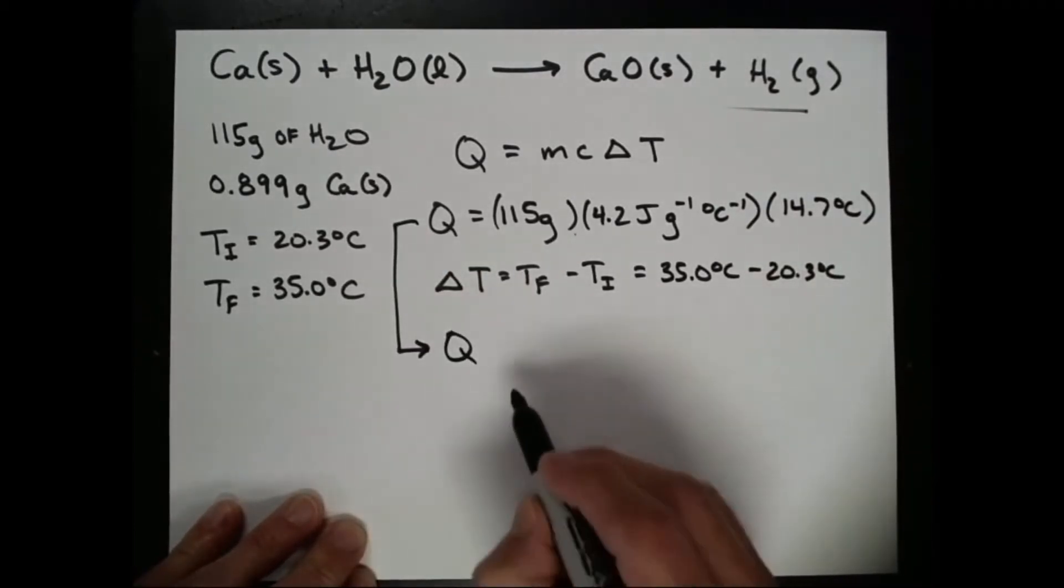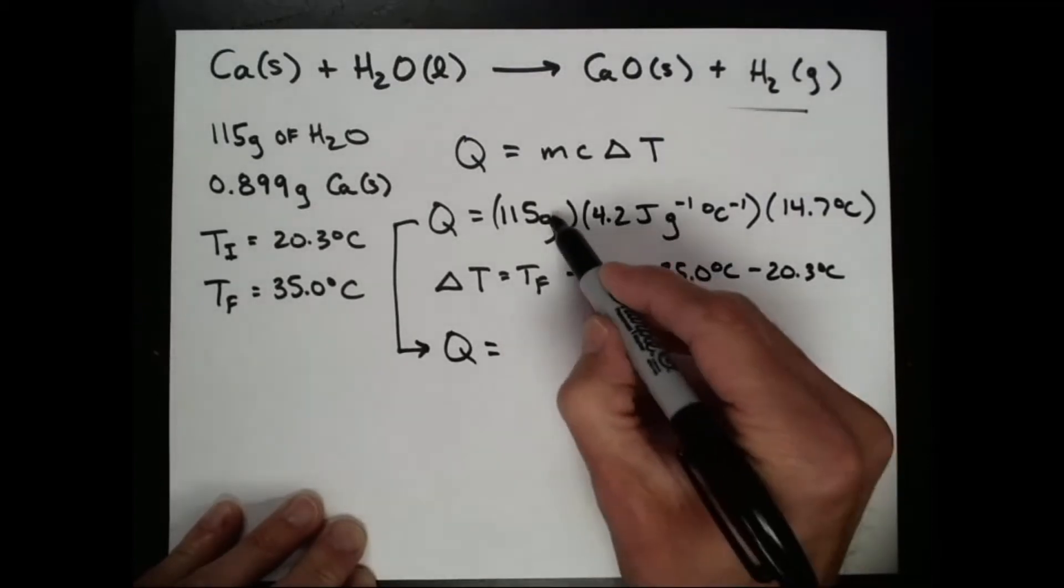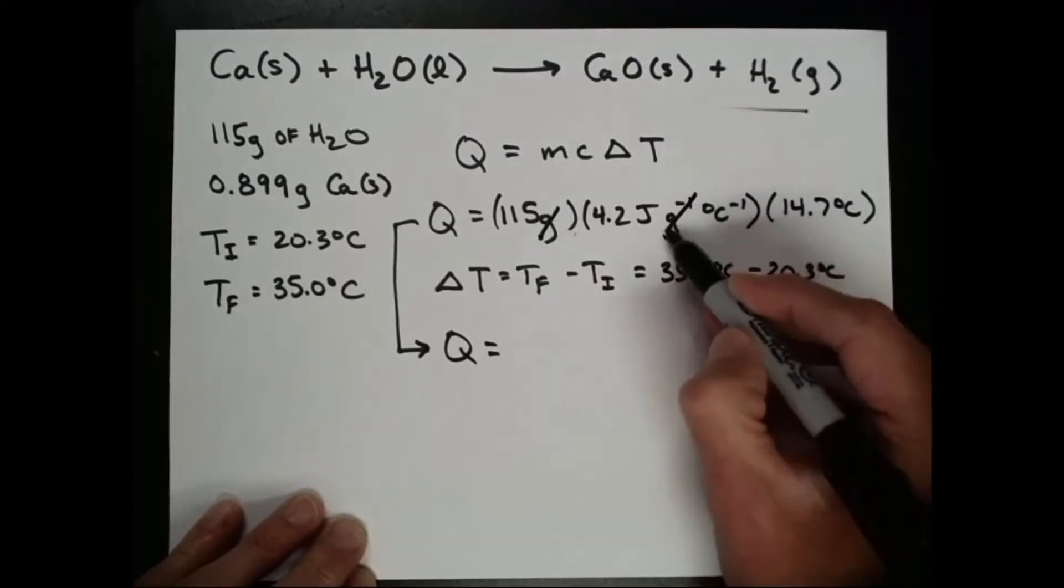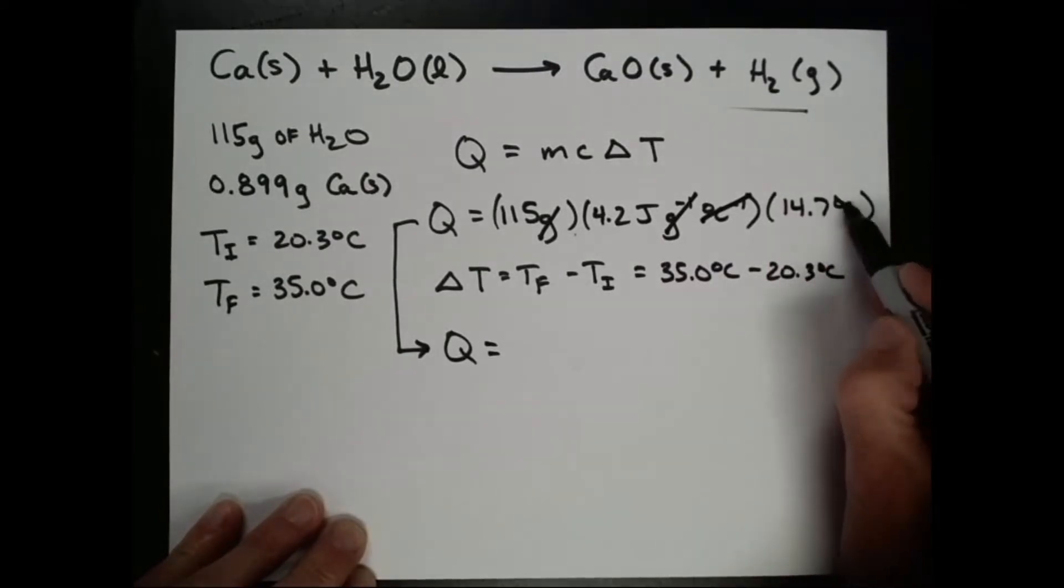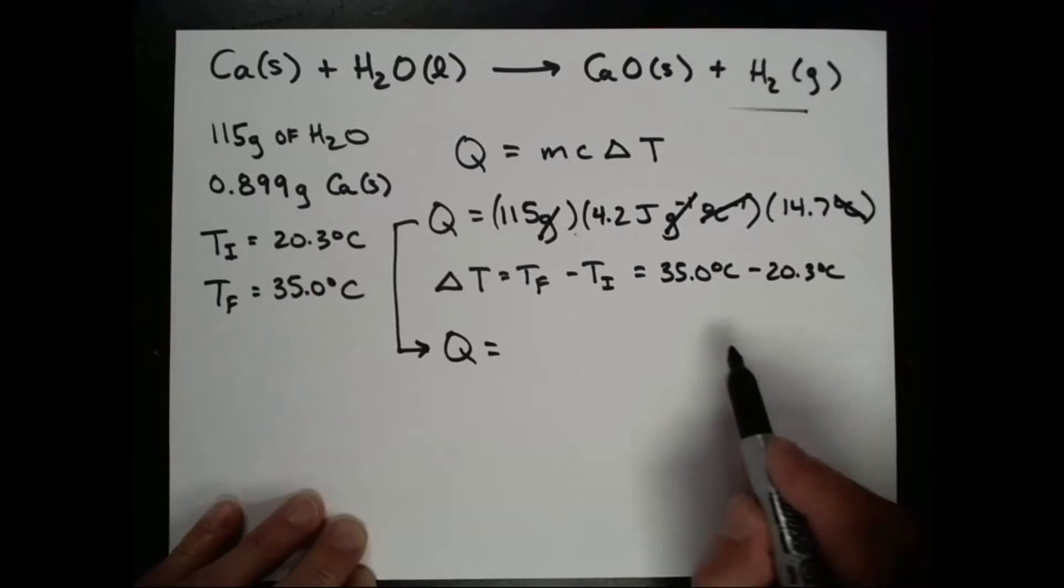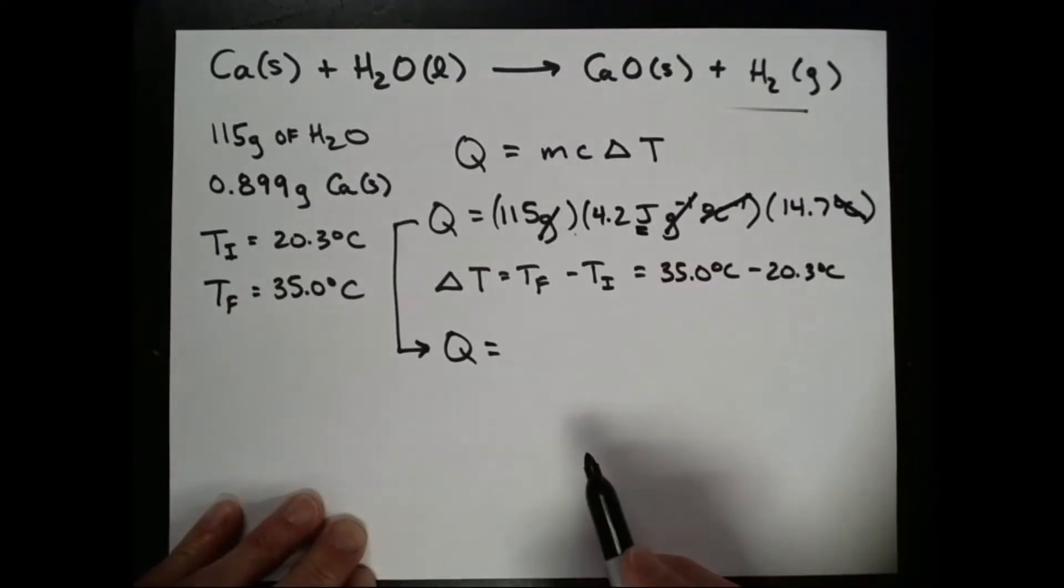So the energy gained as heat by the water, let's see, the units there, this gram cancels this inverse gram when I multiply those together. This inverse degree Celsius cancels this degree Celsius when I multiply them together. And the unit that's left is a joule.